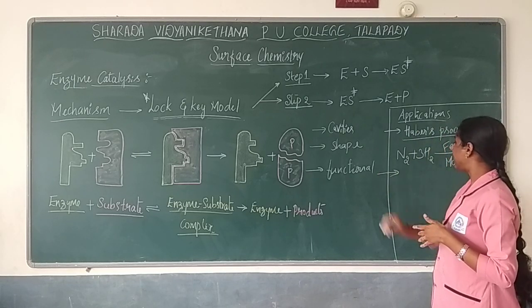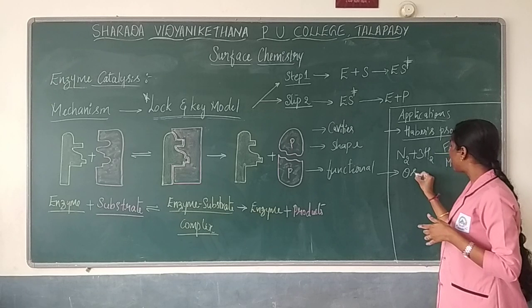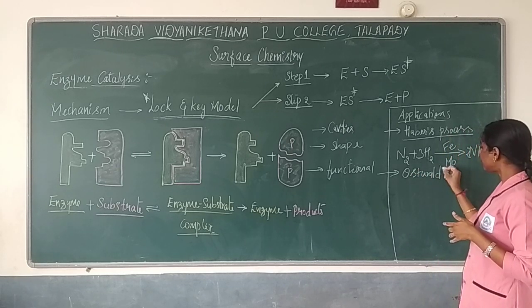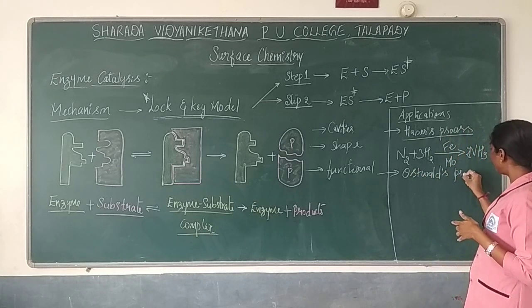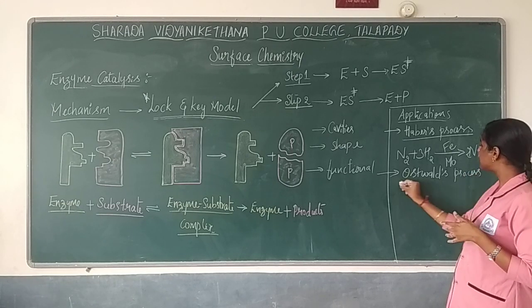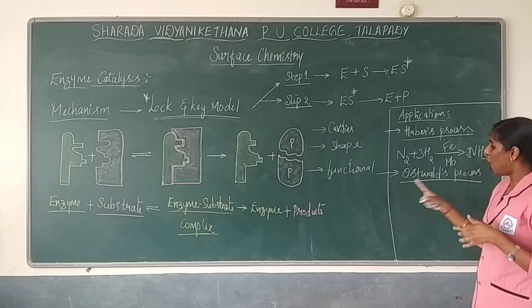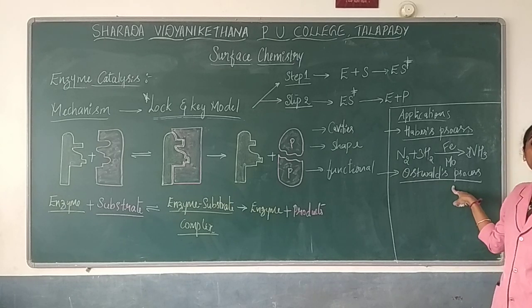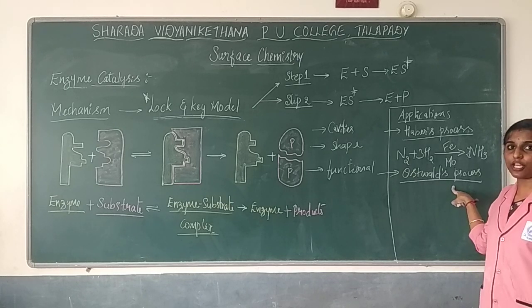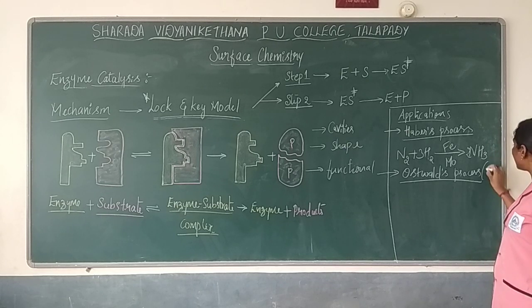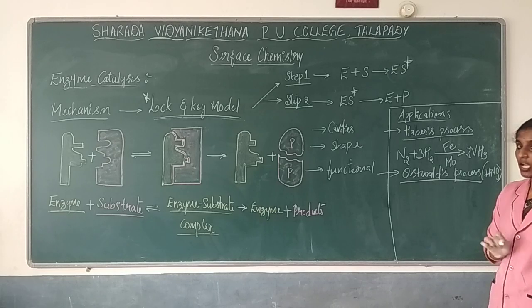The next application is known as the Oswald process. So what is this process? The Haber's process is the production of ammonia. The Oswald process is the production of concentrated nitric acid, HNO3. So the production of HNO3 will be done by the Oswald process.